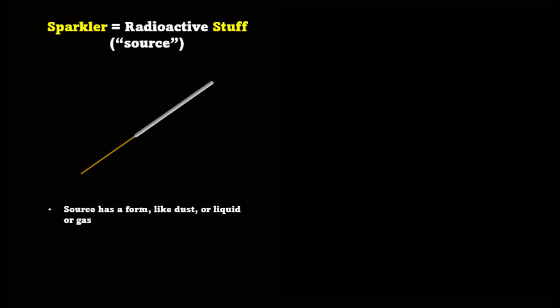The radioactive stuff, or source, has a form. It can be a solid, like a rock, or dust, or a liquid, or a gas. Since it's stuff, it lasts, it sticks around for a long time, and it can move from place to place. You could carry it somewhere, or dust or gas might be blown by the wind.